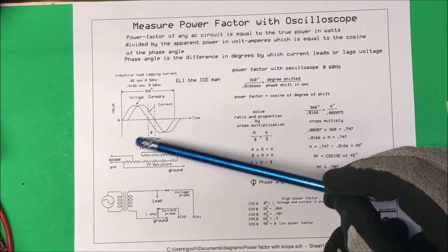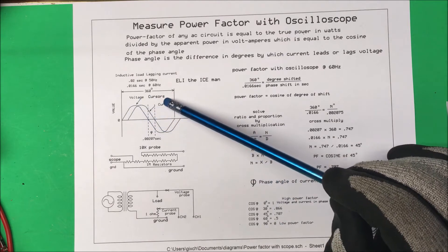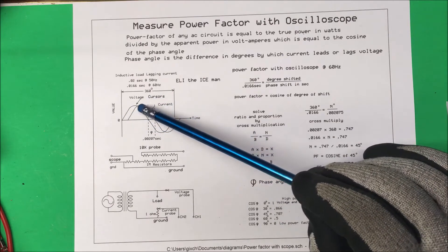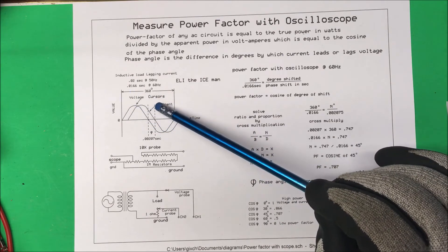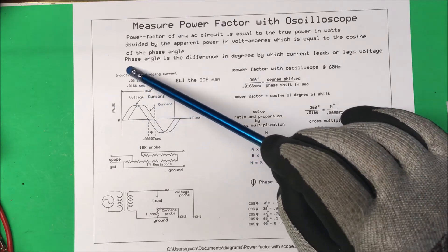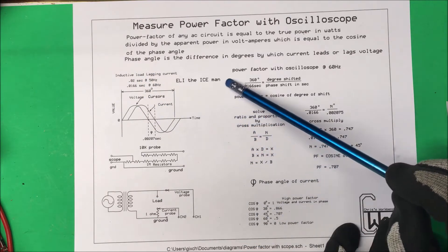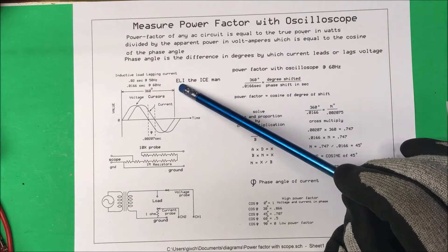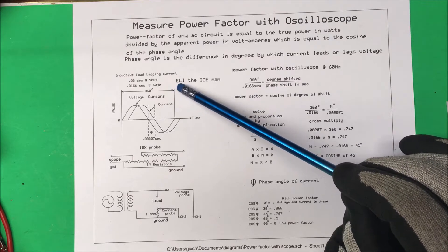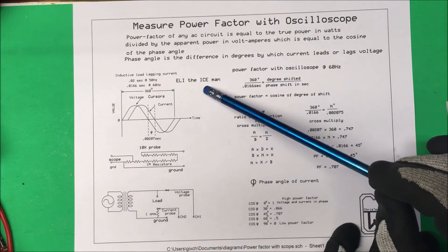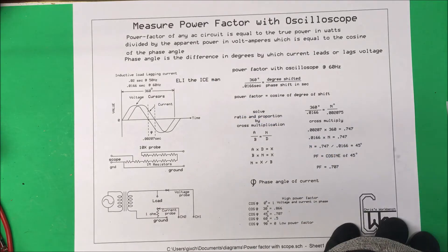Here we have a couple of sine waves — the first one is voltage and then current. In this case the voltage is leading the current, so that's an inductive load. Remember ELI the ICEman: L is for inductance, so the voltage leads the current. For capacitance, the current leads the voltage.